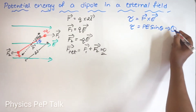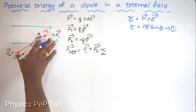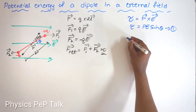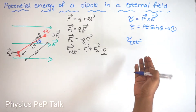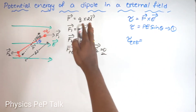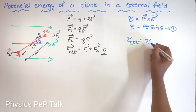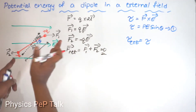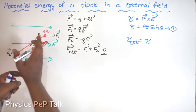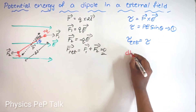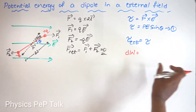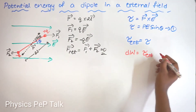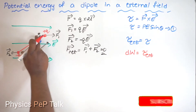I will call this equation 1. To do work opposite to the will of the dipole, I have to apply some external torque equal to the internal torque. The amount of work done, dW, is the external torque multiplied by the angular displacement dθ.